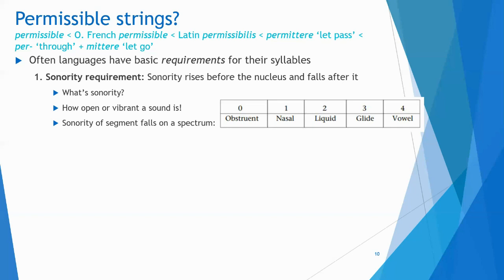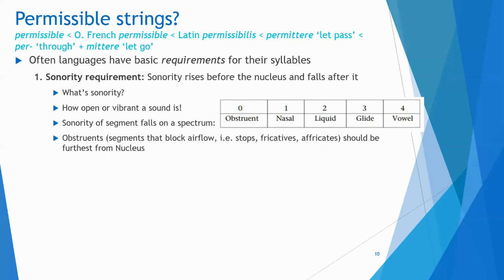Glides will always want to appear right before or after vowels, liquids before glides, and nasals before that. In English, we don't usually allow nasals before liquids. This spectrum is useful for determining permissible strings before and after the nucleus. If the nucleus is the vowel, we want to build up from a zero-sonority obstruent toward the vowel, then fall back down afterward. Obstruents are the segments that block airflow — they should be furthest from the nucleus. As you get closer to the nucleus, you get more sonorous sounds: liquids, glides, then vowels, which are the most sonorant and thus the perfect nucleus.